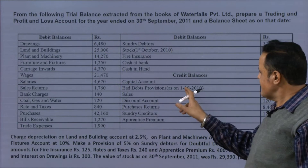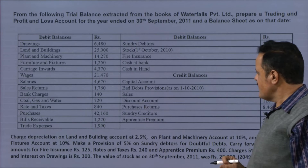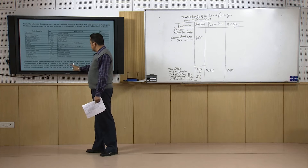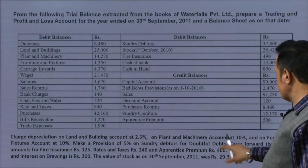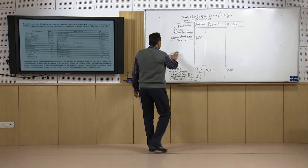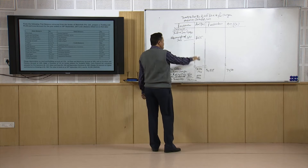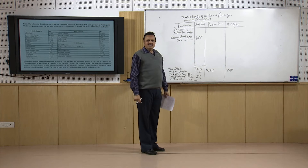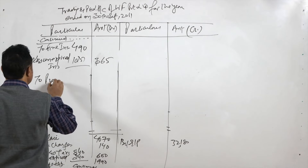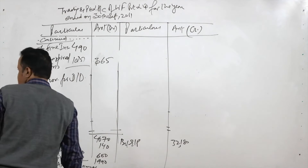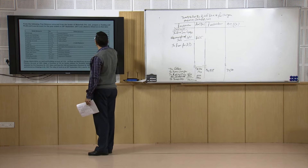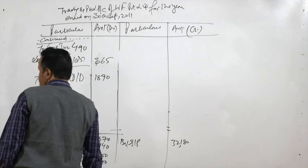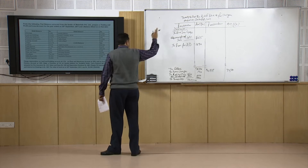On the credit side, we have bad debt provisions. The adjustment states: make a provision of 5% on sundry debtors for doubtful debts. Under the convention of conservatism, we must provide for the part of credit sales that may not be recovered. The sundry debtors figure is 37,800 rupees, and 5% of this works out as 1,890 rupees as the provision for doubtful debts.